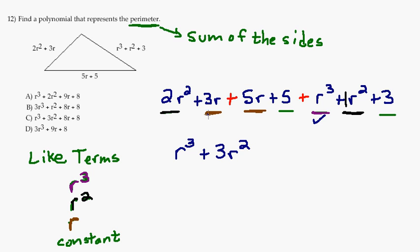For the r terms, we've got a 3r, a positive 3r, plus a 5r. Actually, all these are positives and pluses, but if there were minuses in here, you'd have to think of it as subtracting or a negative. 3r's plus 5r's is 8r's. So we have 8r.